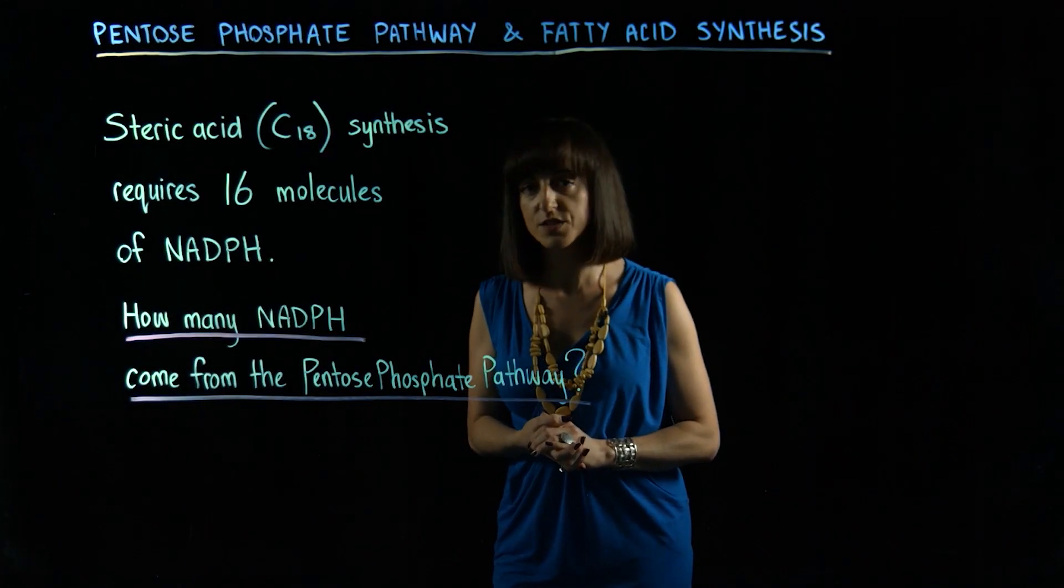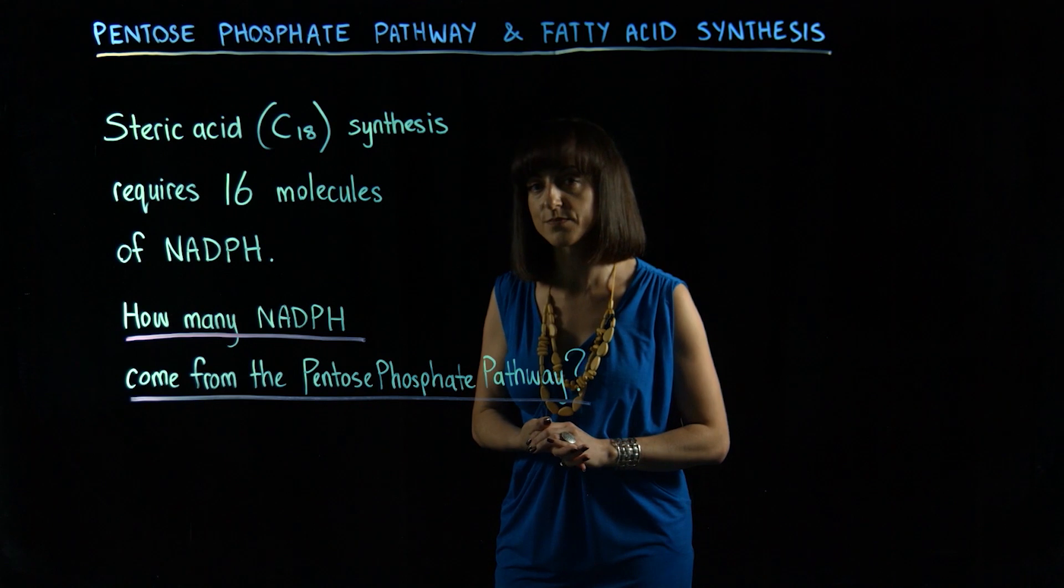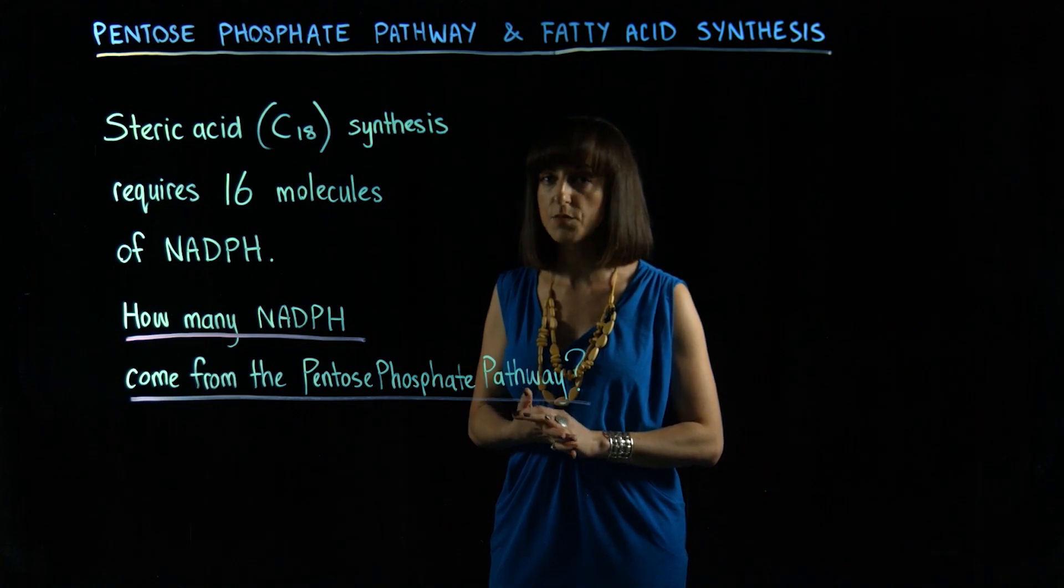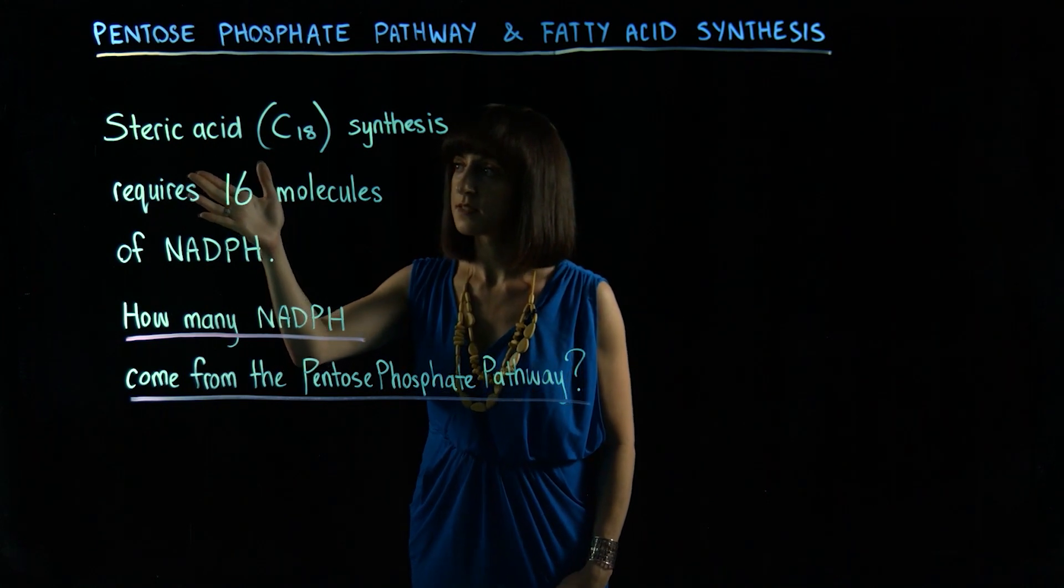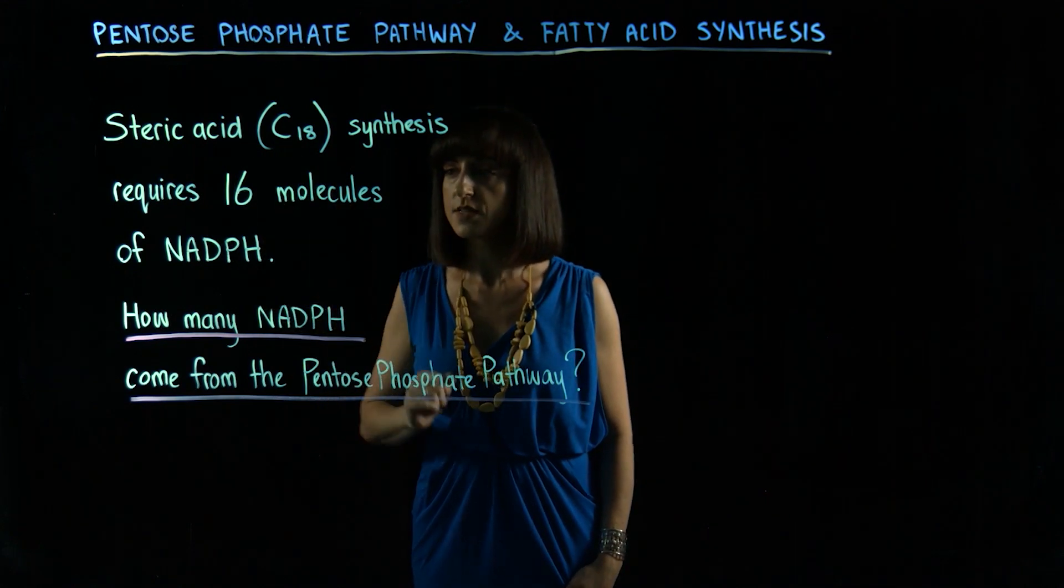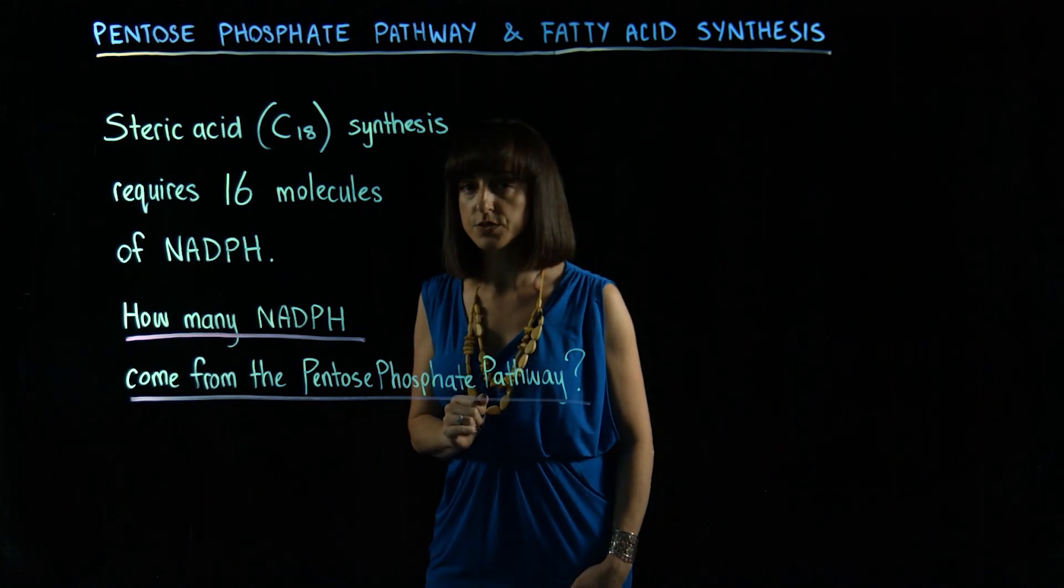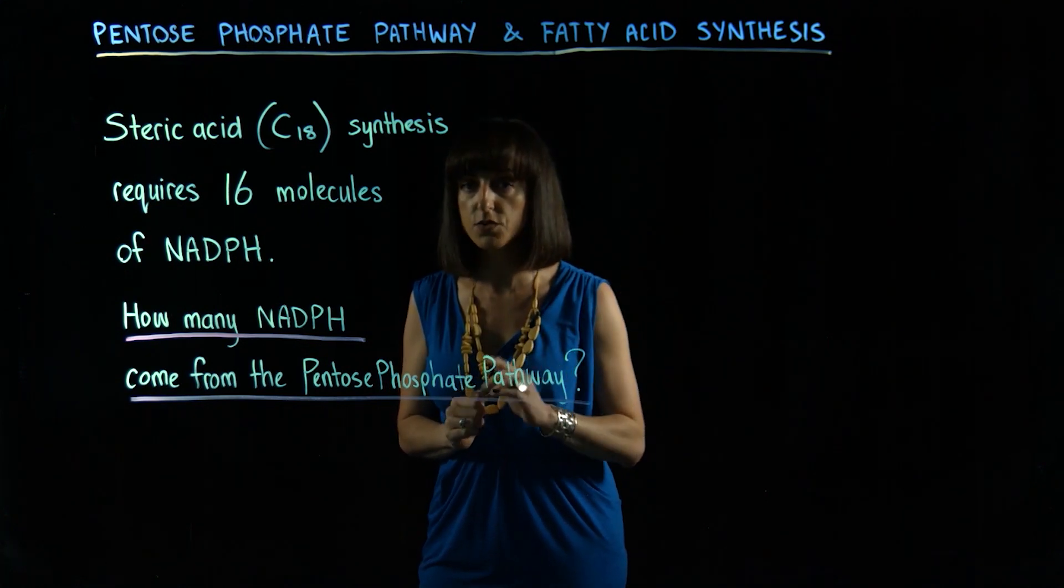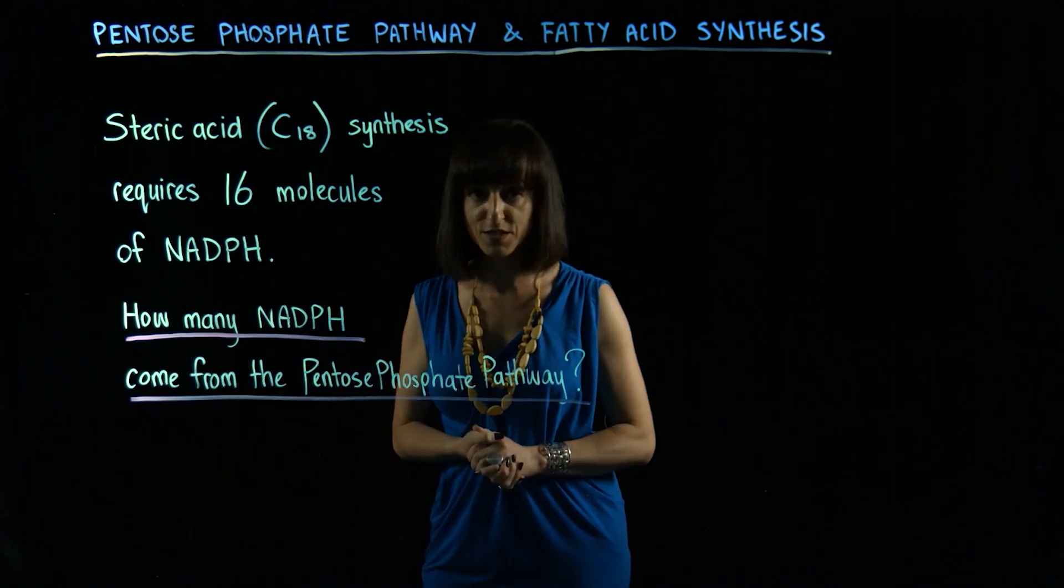So now I'm going to ask you a question that helps you to integrate biochemical pathways, in this case, the pentose phosphate pathway and fatty acid synthesis. As we've just established, fatty acid synthesis actually requires NADPH to come from two separate sources. If we look at the production of the fatty acid stearic acid, which is 18 carbons long, we can see that it requires a total of 16 molecules of NADPH reducing power. So if one NADPH is produced every time an acetyl-CoA molecule is transported into the cytoplasm from the mitochondria, how many more NADPH molecules are then required to come from the pentose phosphate pathway?